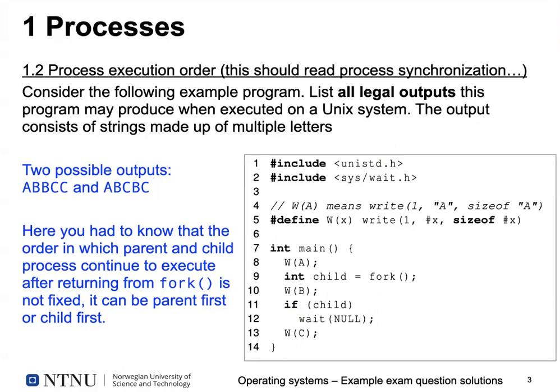If you play through all possible sequences of execution of parent and child processes, you get two possible output orders. The first is 'a bb cc' — both child processes manage to output their 'b' before running into 'c'. The other valid output would be an interleave: 'a bc bc'.